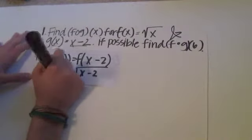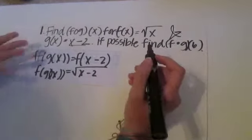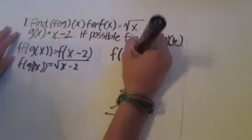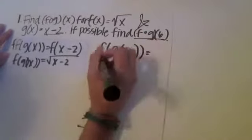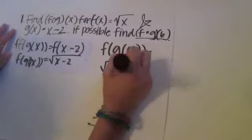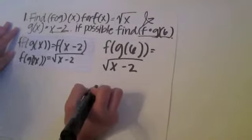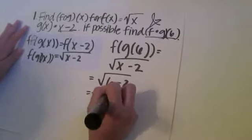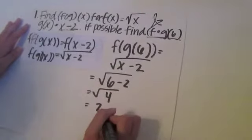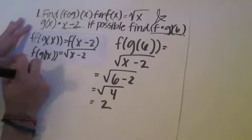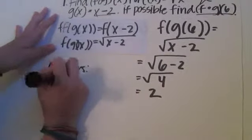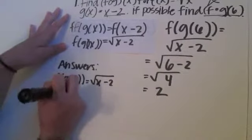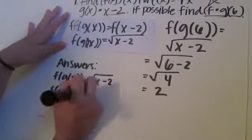Once we've found f of g of x, we then have to find f of g of six. We rewrite the problem: f of g of six equals the square root of x minus two, and x becomes six. So it's the square root of six minus two, which equals the square root of four, which equals two. Our answers are f of g of x equals the square root of x minus two, and f of g of six equals two.